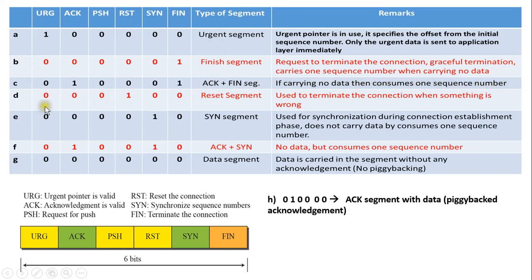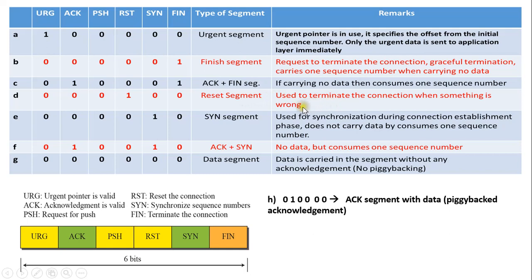The fourth bit pattern for the control flag is 0,0,0,1,0,0. Only the bit corresponding to the reset flag is set. So it is the reset segment, and this reset segment is used to terminate the connection abruptly whenever there is some fault in the connection or something goes wrong.